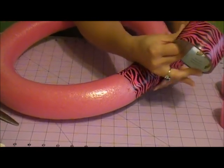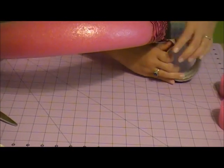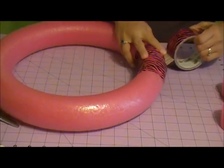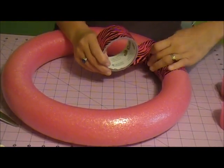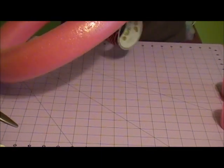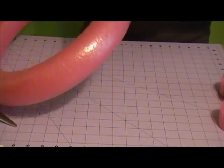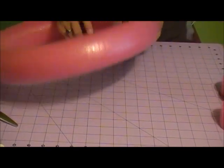You don't have to worry about what's going to show because when you are done with any wreath form, if you're going to cover it like we are, then you're not going to be able to see this anyway. I'm going to continue going around a little bit more. Make sure you've got it real good because one that I did, my kids started playing with it and they made one of them come loose. But that was because I did not have very much duct tape on it.